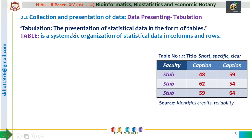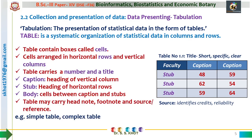Tabulation is the process of presenting statistical data in the form of a table. A table is a systematic organization of data in the form of columns and rows. The table contains a number of boxes and each of these boxes is called a cell. These cells are arranged horizontally — such horizontal arrangement is called a row — and the vertical arrangement of cells is called a column.